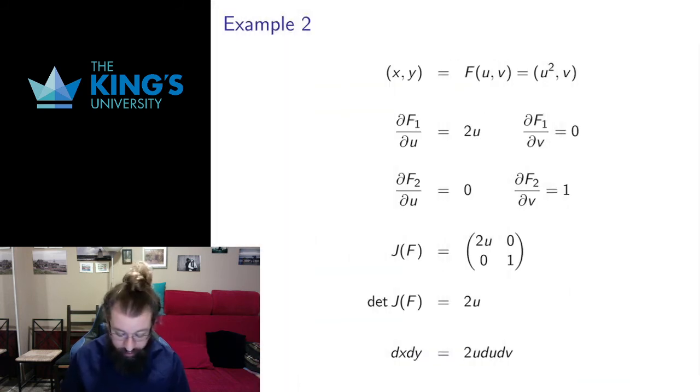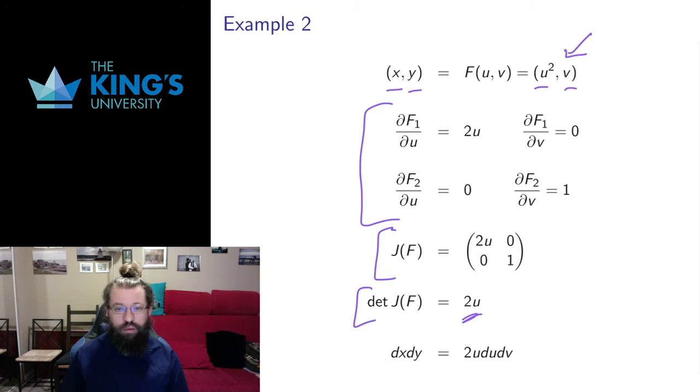Here's a nonlinear one where I have here x equals u squared and y equals v. There are the four partial derivatives. I put them in the Jacobian matrix. I take the determinant. And I get the determinant here actually depends on the new variables. And that is often the case. And this says that the infinitesimal area dx dy is actually depending on my location in the new variables 2u times du dv.